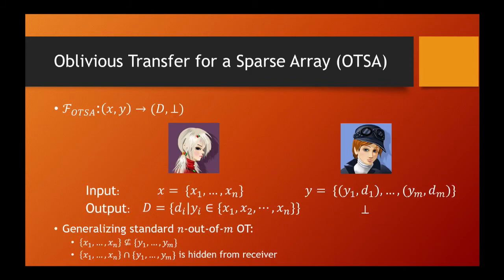Let's start with OTSA. Following the two-party computation framework, OTSA is defined as follows. The receiver holds an index set X1 to Xn. The sender holds another index set Y1 to Yn; each sender index Yi is also associated with a data atom Di. At the end of the protocol, the receiver gets the set of data atoms Di such that the corresponding sender index also appears in the receiver's index set. Our notion generalizes the standard OT notion because the receiver index set is not necessarily a subset of the sender index set. Moreover, we require that the intersection of the two index sets is hidden — the receiver only receives a set of data items without knowing their corresponding indexes.